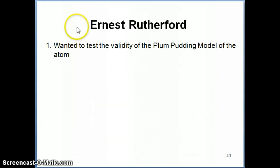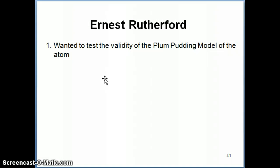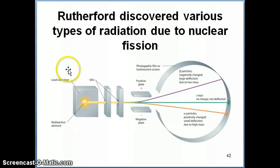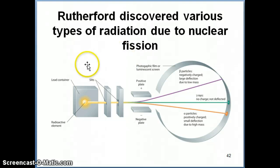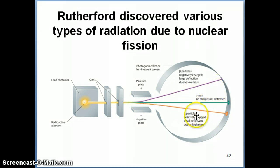Once he proposed this model, one of his former students, Ernest Rutherford, decided that he wanted to test the validity of this plum pudding model of the atom. Rutherford was already a very successful scientist at that time, but prior to that he was working in Thomson's laboratory as a student. During that work and further work later on, he discovered various types of radiation that could be generated as a result of nuclear fission — basically the fact that a heavy element can be split apart into lighter elements. Some byproducts are produced, and those are listed here, the ones that Rutherford found.